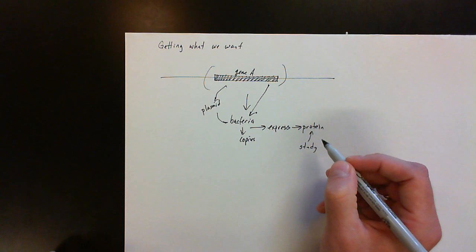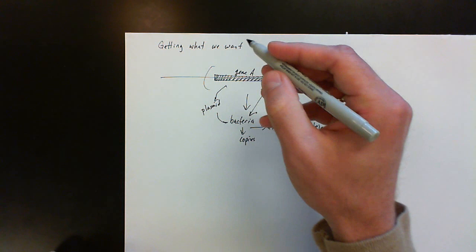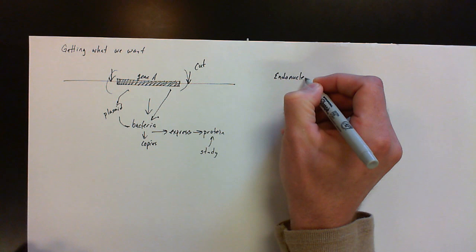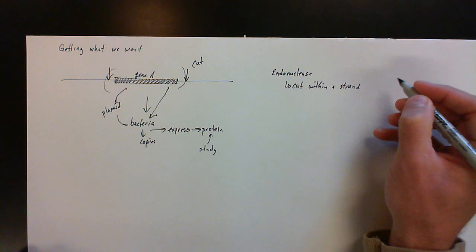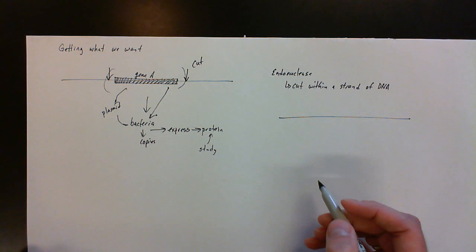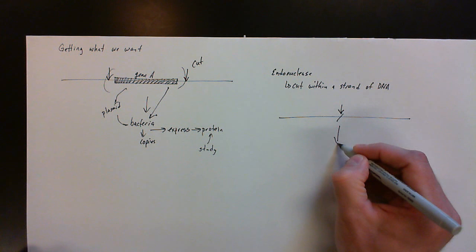Alright, so how do I get it out? One of the first ways people have learned how to do that is to actually cut it out. This is going to utilize what we call endonucleases. These endonucleases can cut within a strand of DNA. So let me draw that in pictorial form. If I've got a strand here, if it's an endonuclease it can cut in the middle. So if I cut with an endonuclease it leads to two products.